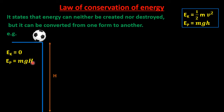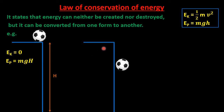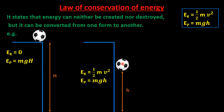Now consider the second case where the ball is falling from the height. In this case the velocity is not zero and the ball is at a height smaller than the previous height, represented by small h. At this position the ball possesses both kinetic energy as well as potential energy, given by the corresponding expressions.